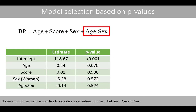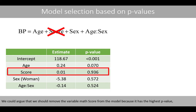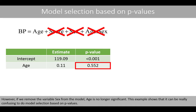However, suppose that we now like to include also an interaction term between age and sex. This will result in that none of the explanatory variables are significant. We could argue that we should remove the variable math score from the model because it has the highest p-value, but we will then end up with two terms that are non-significant. If we remove the variable sex, we must also remove the interaction term because the interaction involves the variable sex. However, if we remove the variable sex from the model, age is no longer significant. This example shows that it can be really confusing to do model selection based on p-values.